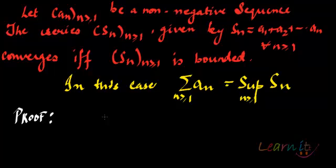In case you have AN, a non-negative sequence, then the series created by SN converges if and only if SN is bounded. And in fact what happens in this case is that the sum of the series AN will equal the supremum of SN.